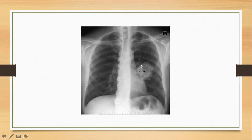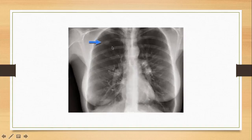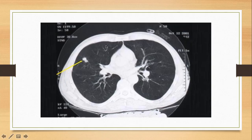Here is a slide showing lung cancer — a very irregular mass on the left side. Here is a pulmonary nodule that will turn out to be a cancer, and here is another very irregular nodule on CT scan that is malignant.